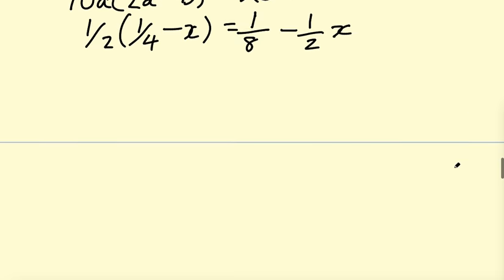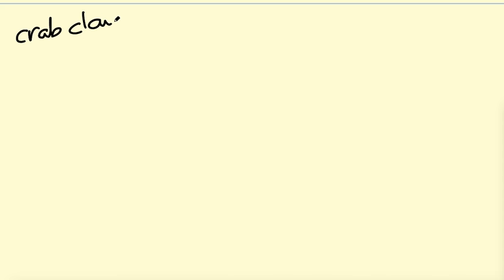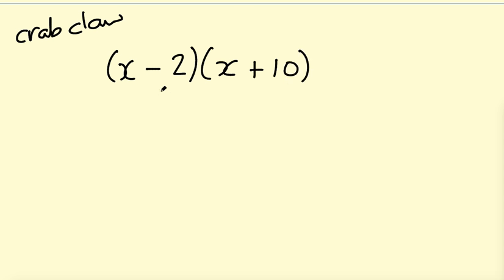Now let's look at double brackets, and I'm going to go over three methods you can use to expand them. The first method is called the crab claw — a bit of a funny name. You might have something like (X minus 2)(X plus 10). What this is saying is everything in the first bracket multiplied by everything in the second bracket — you need to multiply everything by everything.